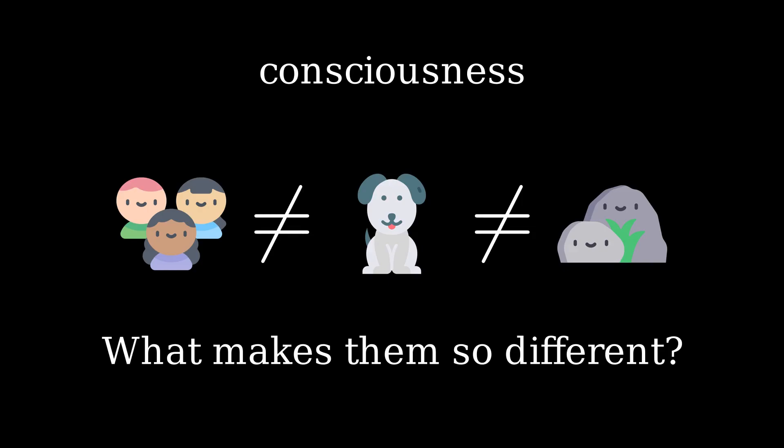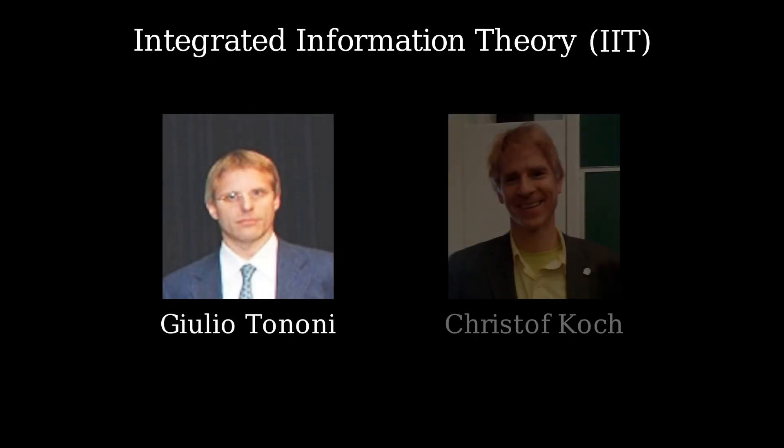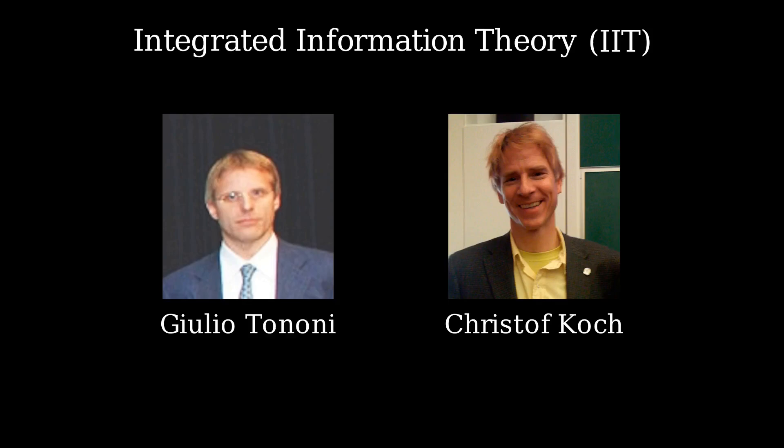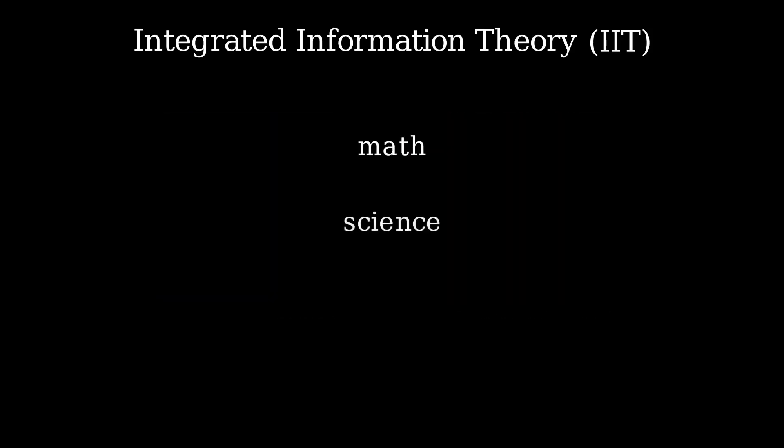This video is the first of a series in which we learn about the Integrated Information Theory, or IIT for short. It is usually associated with the work of the neuroscientists Giulio Tononi and Christophe Koch, although there are many others contributing to the theory. IIT uses math, science and philosophy to help explain consciousness. In this series, we will focus on some of the mathematical aspects of the theory, as well as its philosophical underpinnings.